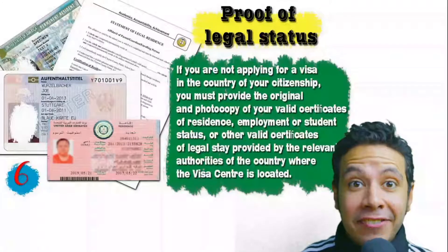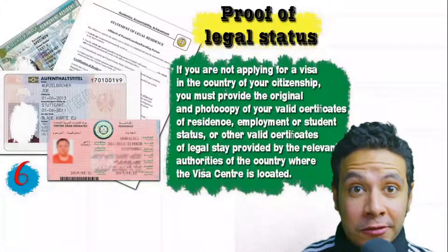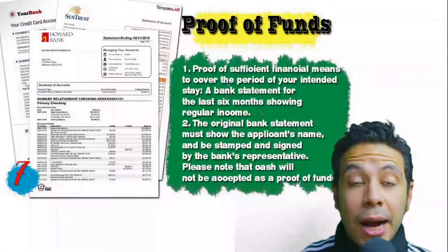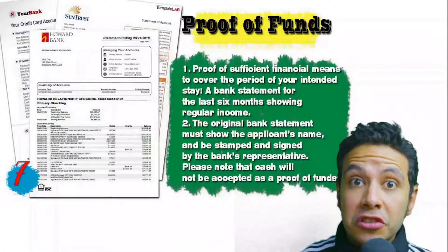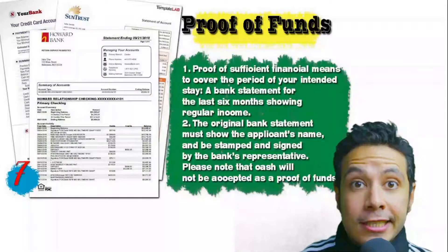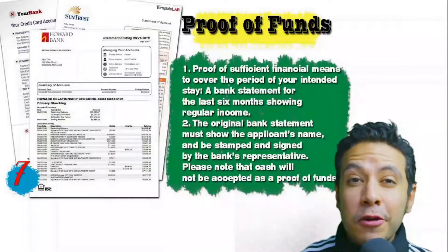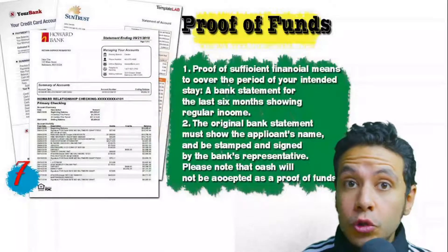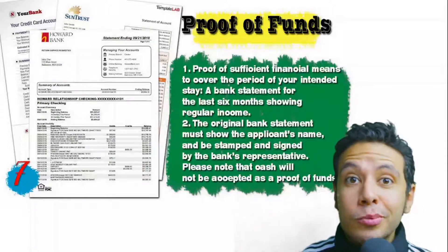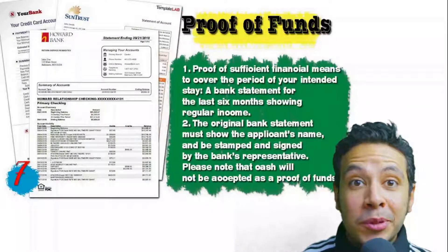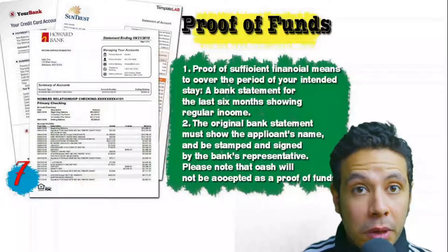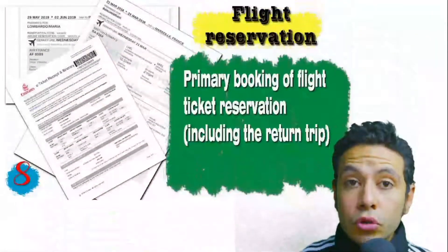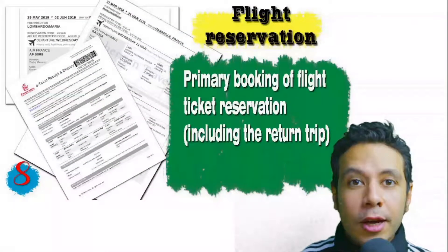In some cases, a valid residence visa for that country can also be accepted. You will also need to provide proof of sufficient funds — a bank statement showing your balance for at least six months. The original bank statement must show your name and be signed and stamped by bank representatives. Cash will not be accepted as proof of funds.